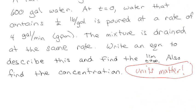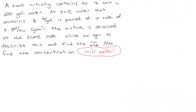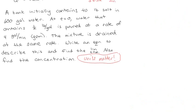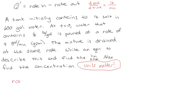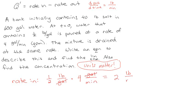So the rate in — going back to unit conversions — I have a half a pound per gallon going in, and then four gallons going in per minute. The gallons cancel out, and I end up with two pounds per minute. So the rate in is going to be two pounds per minute.